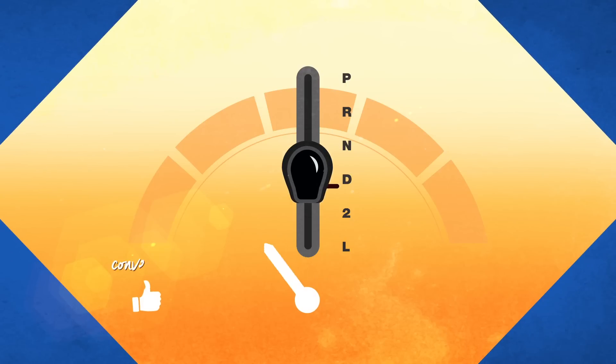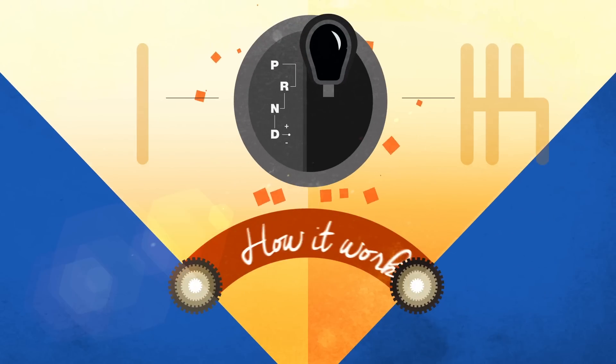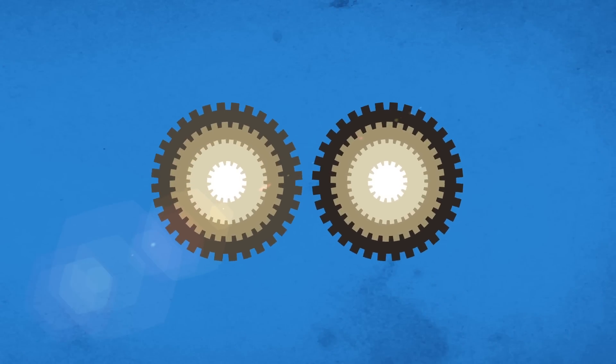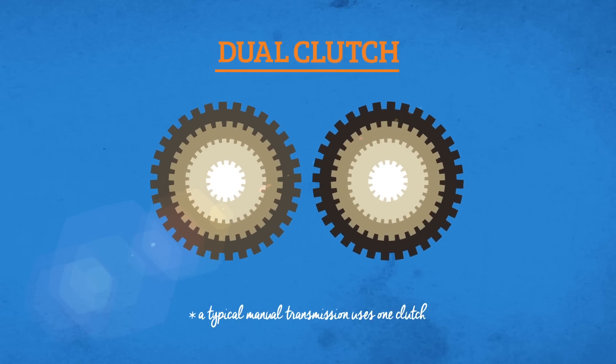This state-of-the-art technology combines the convenience of an automatic transmission with the efficiency of a manual transmission. Here's how it works. The dual-clutch transmission operates a set of gears using two separate clutches, hence the name dual-clutch.